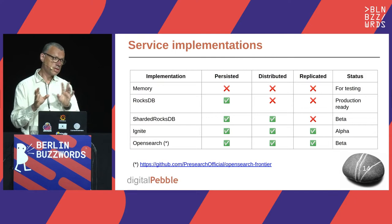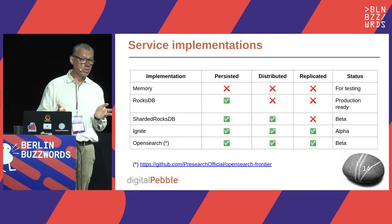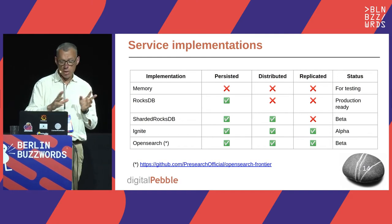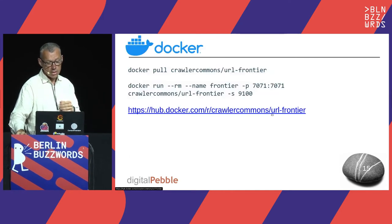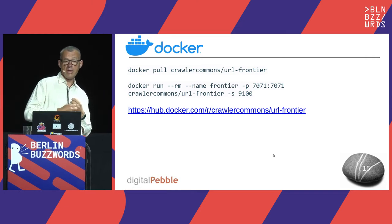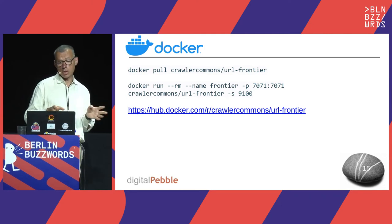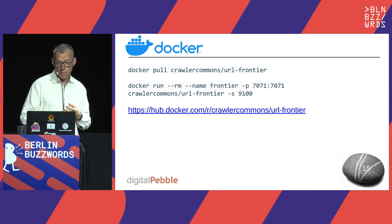Every single implementation will work the same way as far as your crawler is concerned. Using it is straightforward — you can pull the image from Docker and with one command run it, and then you have a working frontier instance ready for crawling straight away.